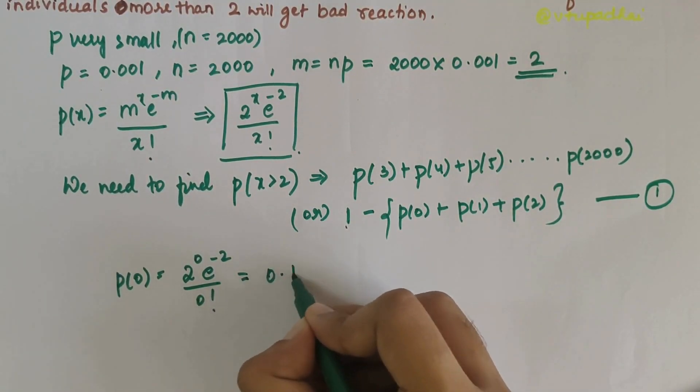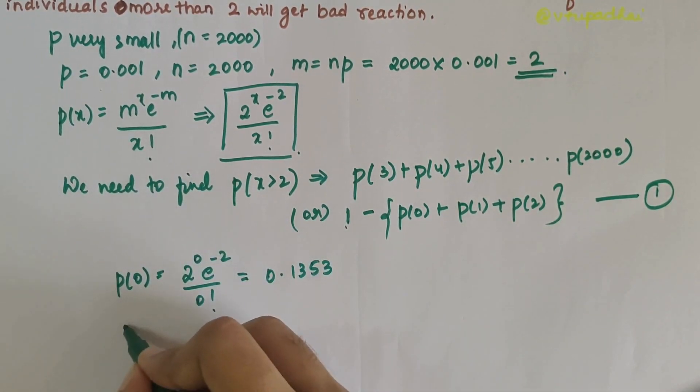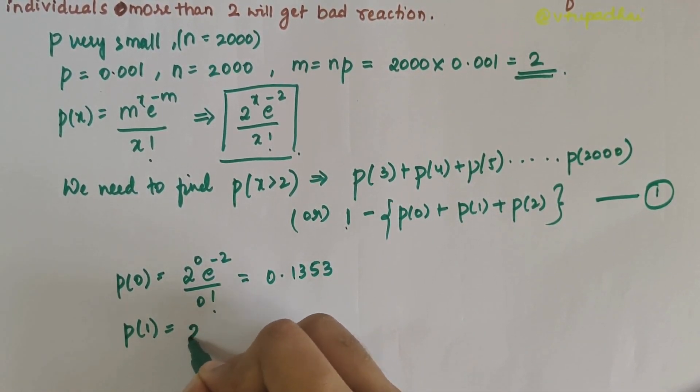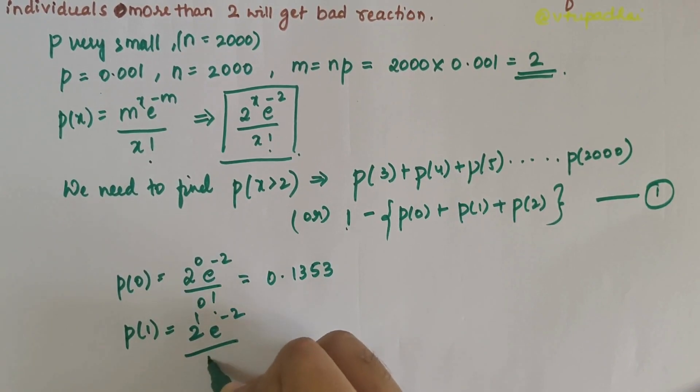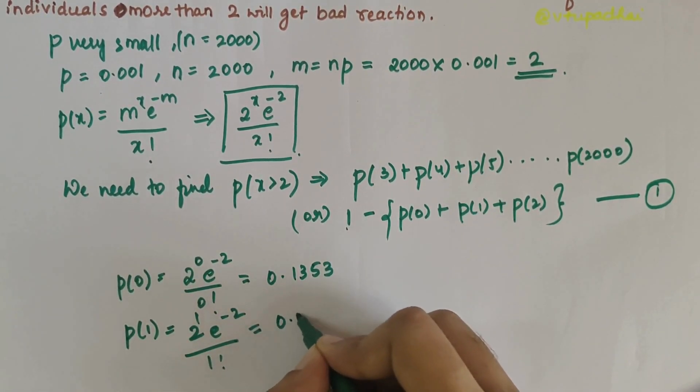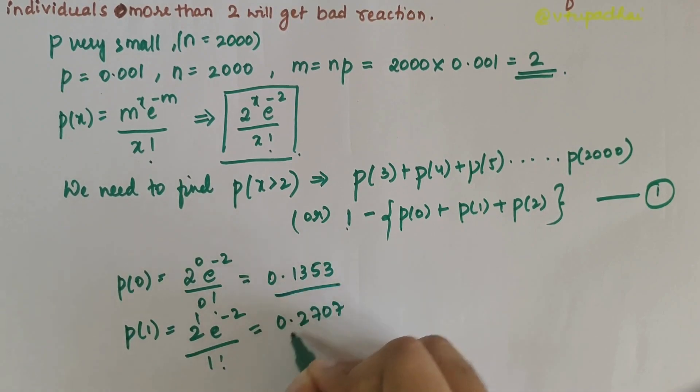Next, P(1) = 2^1 × e^(-2) / 1! = 0.2707, and P(2) = 2^2 × e^(-2) / 2! = 0.2707.